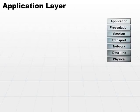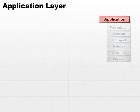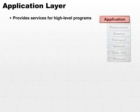The first layer, the top layer, is the application layer. The application layer provides services for high-level programs. Recall that the application layer is the top of the stack, but it is not your application program. The application layer would be the function that your application program would call in order to send a message.